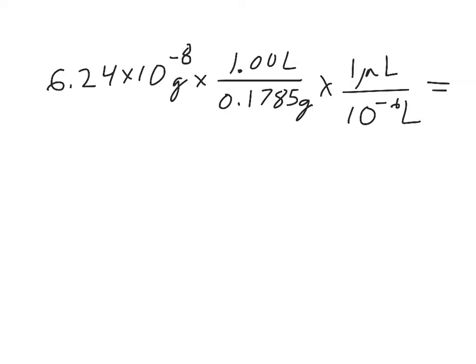Just to write this out as a number sentence, remember these are multiplications and these are division symbols. Multiplication and division are commutative, so it doesn't really matter what we do first. Also, multiplying by 1 has no effect on the problem whatsoever. So if we were just to write this out by hand, what we'd really be wanting to say here is 6.24 times 10 to the negative 8th grams divided by 0.185 grams divided by 10 to the negative 6th.